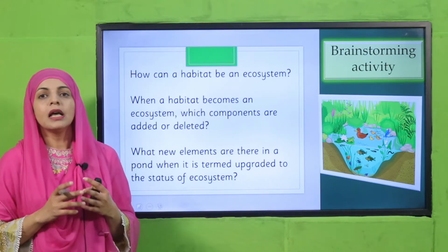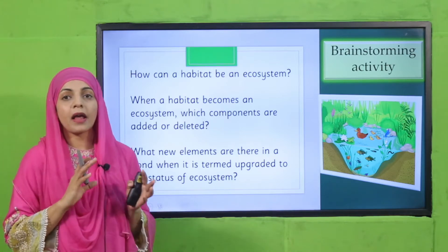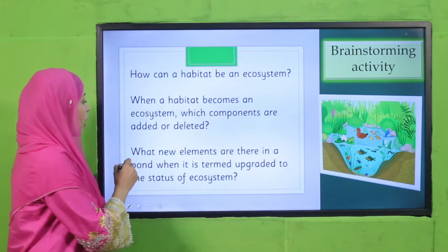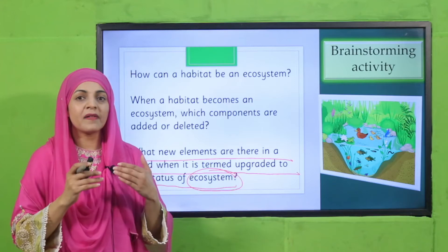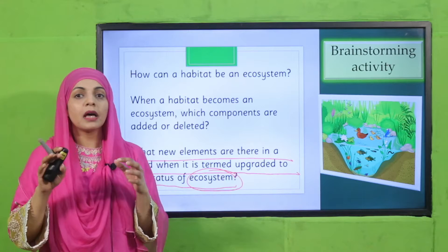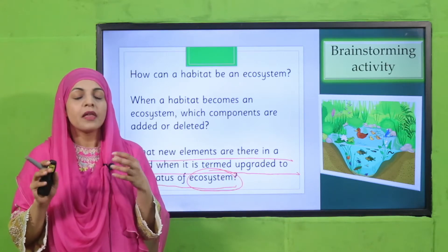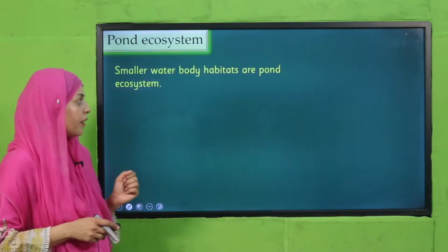All factors — animals, plants, and environmental factors — are added in an ecosystem. So what new elements are there in a pond when it is upgraded to the status of an ecosystem? When we make a pond into an ecosystem, the inhabitants living inside the pond and those living outside the pond, along with habitats like soil, trees, and plants around it, make up a pond ecosystem.